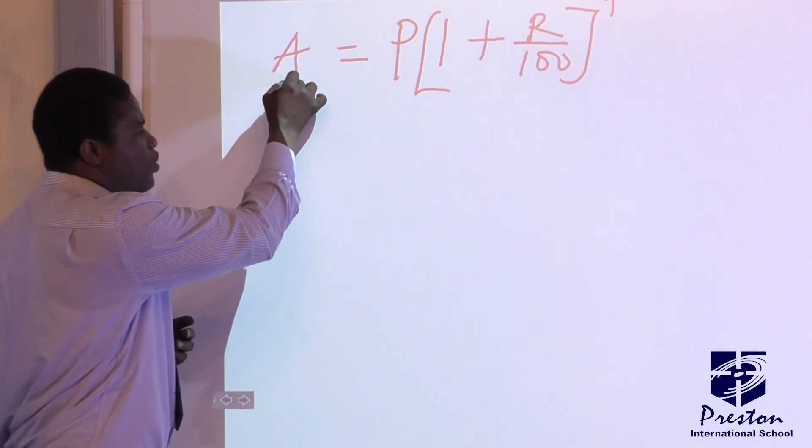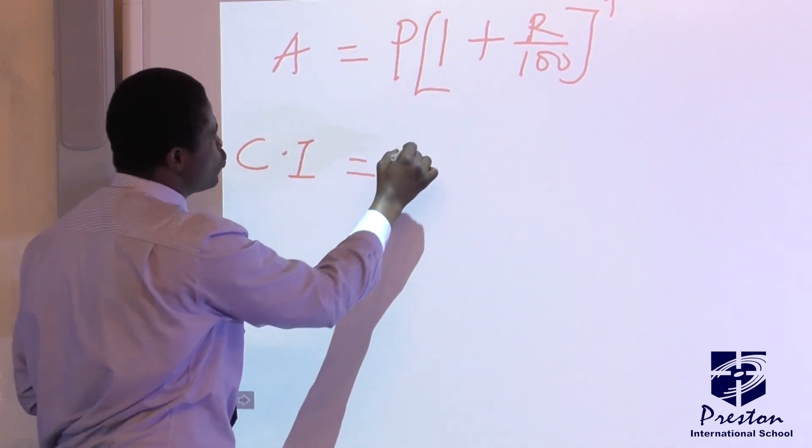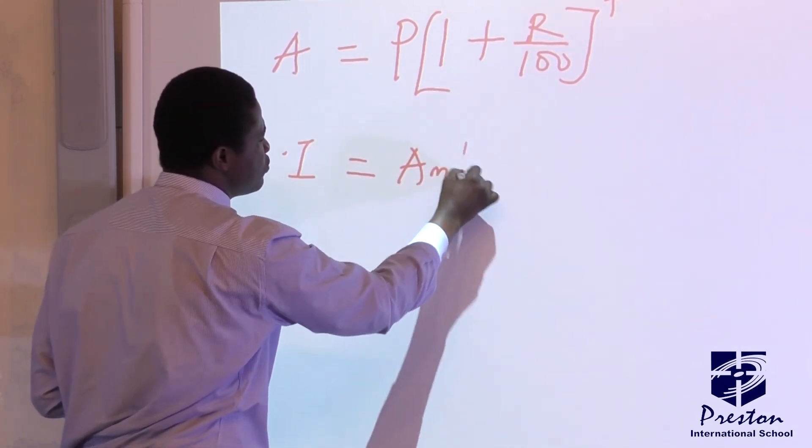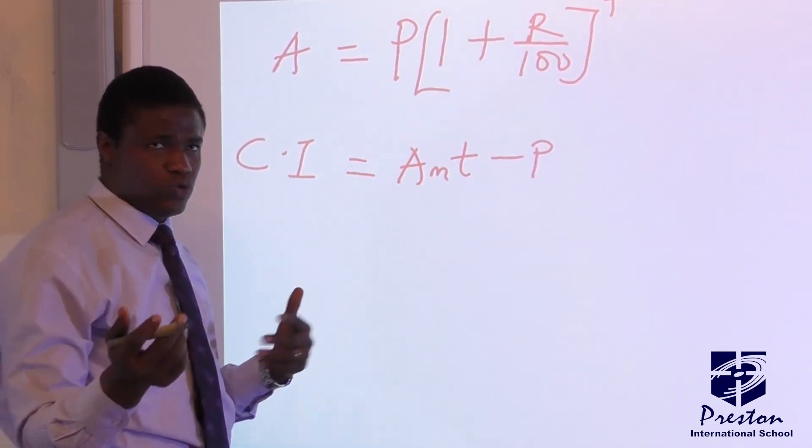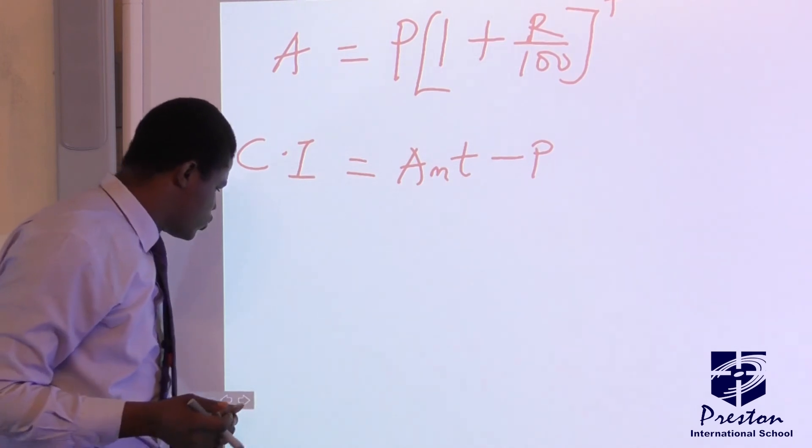So whatever you get for amount, for you now to get your compound interest, your compound interest will now be amount minus principal. That will give you compound interest. So when we get to Google Classroom, we will solve more questions on this.